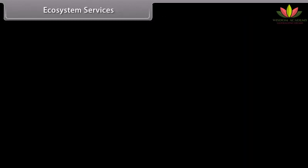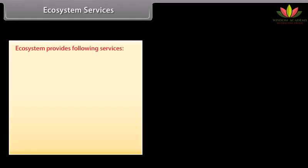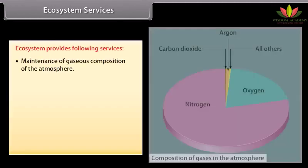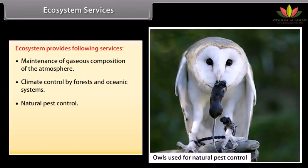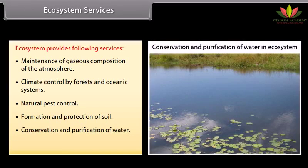Ecosystem services: ecosystems provide the following services — maintenance of gaseous composition of the atmosphere, climate control by forests and oceanic systems, natural pest control, formation and protection of soil, conservation and purification of water, and nutrient cycling.